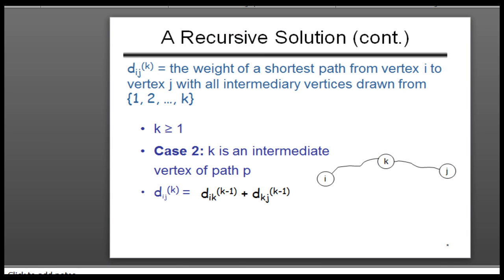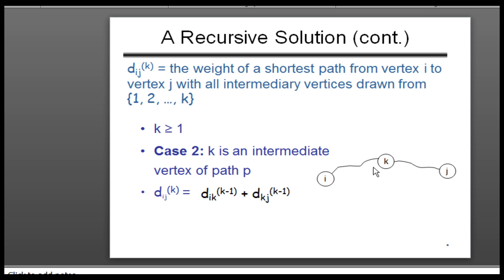The algorithm uses an intermediate vertex k between vertices i and j for relaxing. This intermediate path k runs from one up to k — so in the kth iteration, we consider intermediates from 1 through k. If k is one, we use only vertex one; if k is two, we use vertices one and two as the intermediate path.